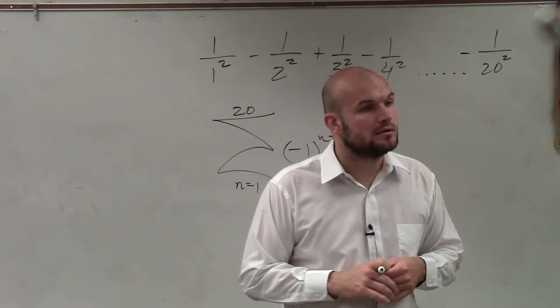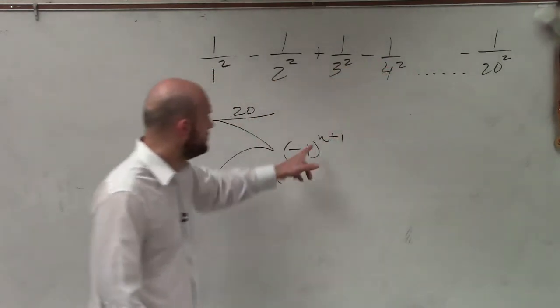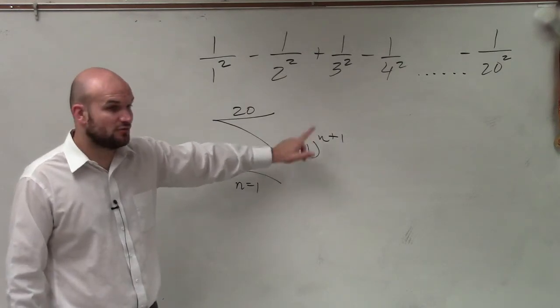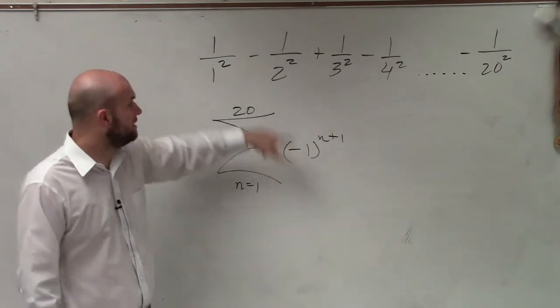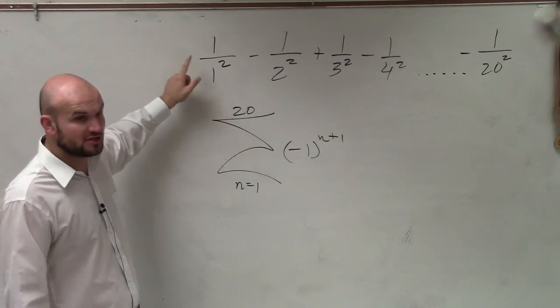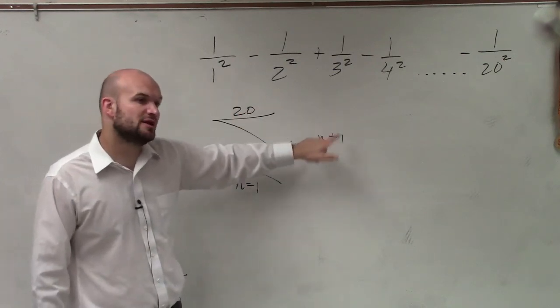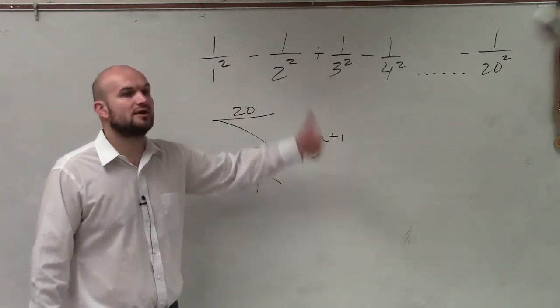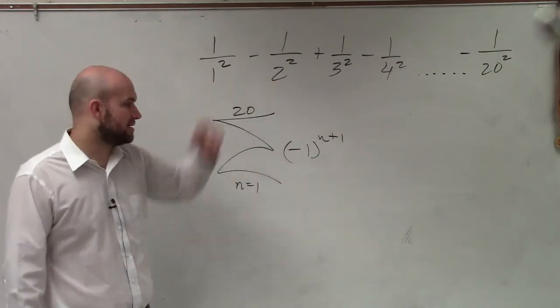Why did you say add 1 to n? Because if you put in 1 in for there, negative 1 squared, or negative 1 to the first power is negative 1. That would make the first term negative. The first term's positive. So if you put in 1 plus 1 squared, negative 1 squared is positive 1. So it makes it positive. And then the next one would be negative.